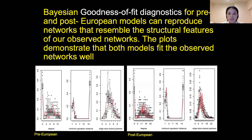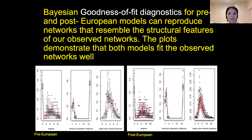Now let's take a look at the results. After fitting the model, we first checked Bayesian goodness-of-fit diagnostic plots. The box plots shown here represent distributions calculated on 100 network graphs simulated from the estimated posterior distribution. The red lines are our observed networks — our real archaeological data — and the gray lines are the 95% confidence intervals. We can see the red lines are mostly located within the 95% confidence intervals, meaning both models fit the observed networks well.